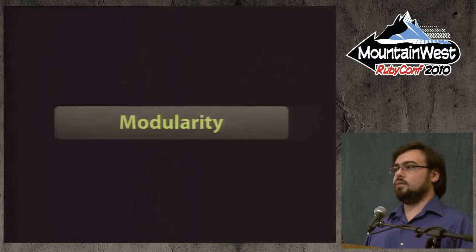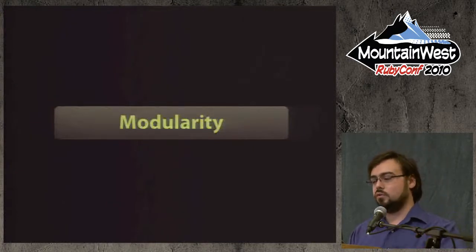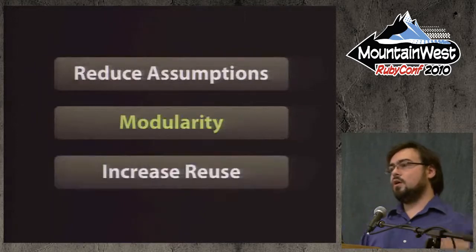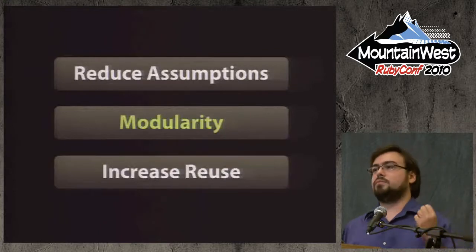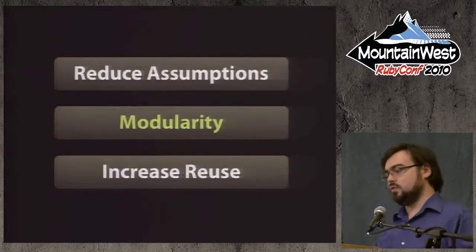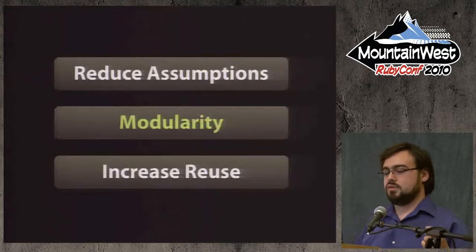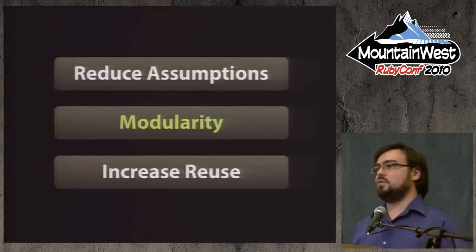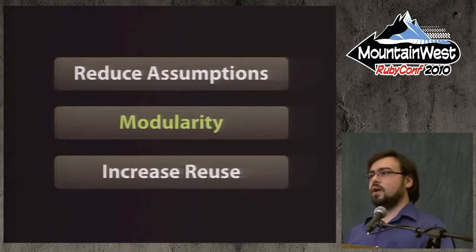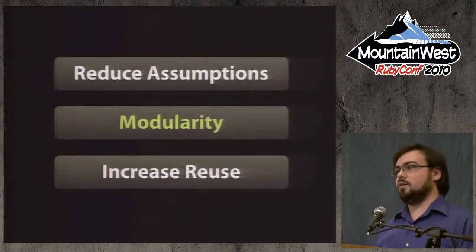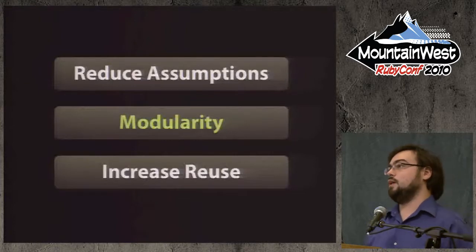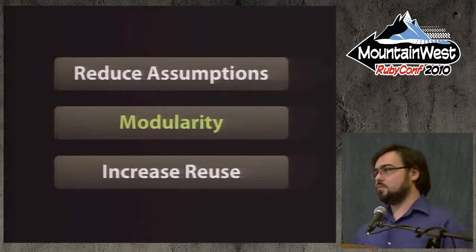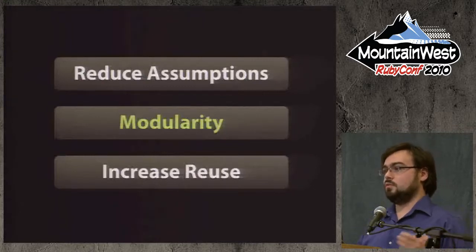So what is modularity? When we talk about modularity, we're really talking about two things: reducing assumptions in order to increase reuse. A lot of times people talk about just reducing assumptions — but the reason we reduce assumptions is to increase reuse. It's easy to go crazy with modularity and reduce assumptions everywhere, but if there's not an obvious reason why you want to reuse something, probably you should wait until there is.